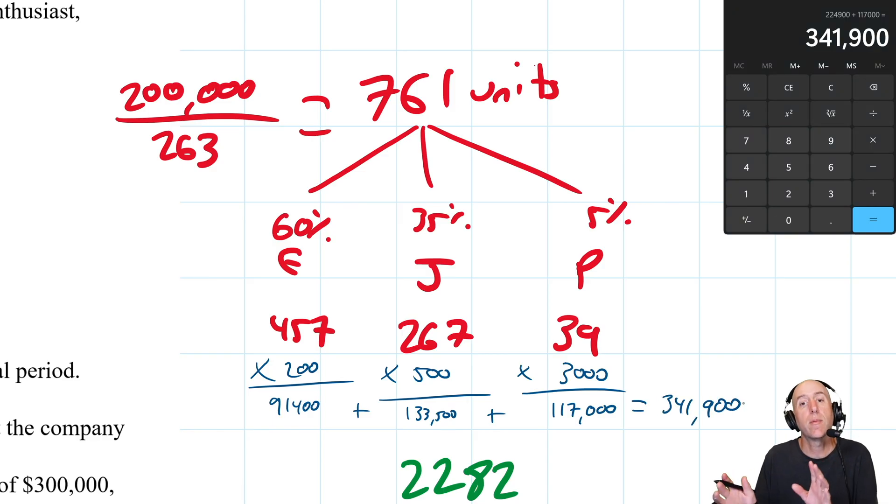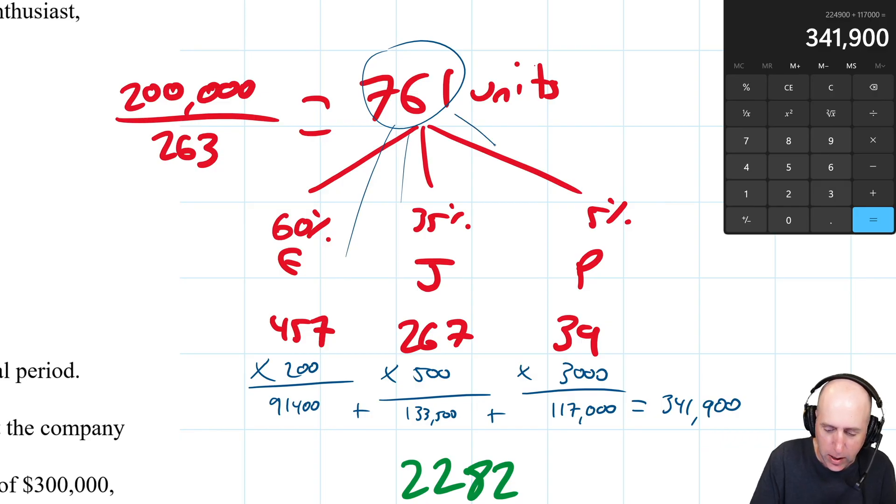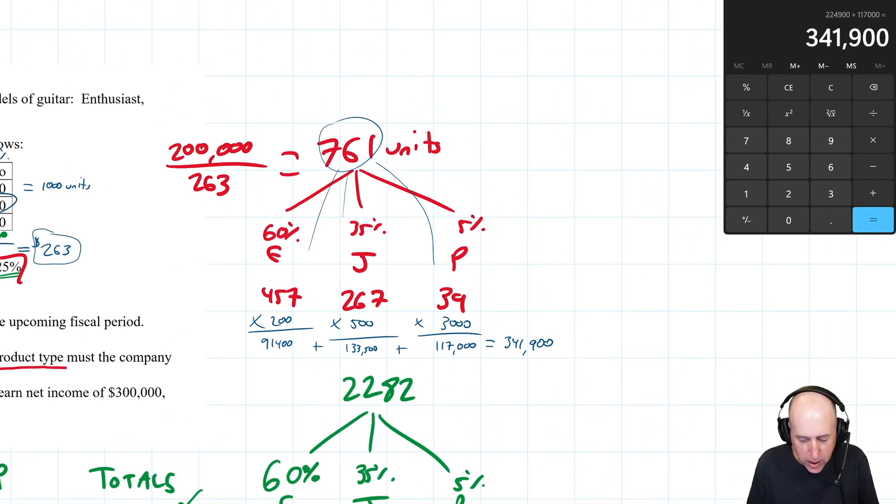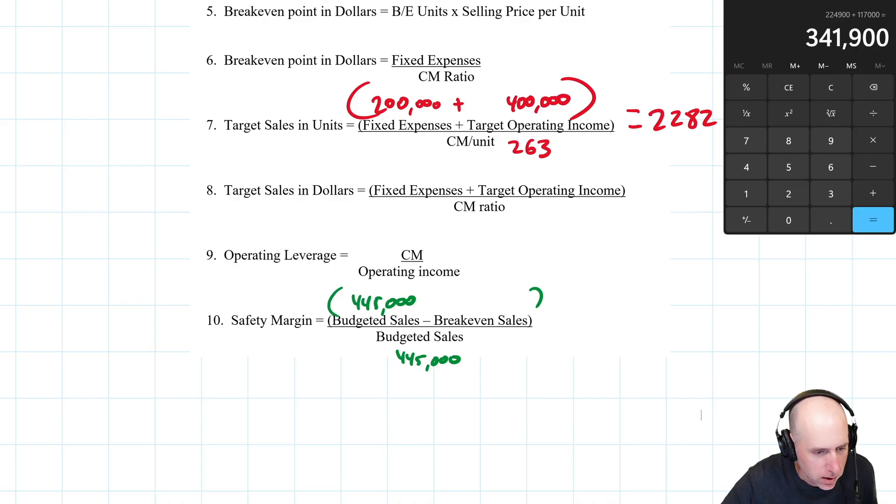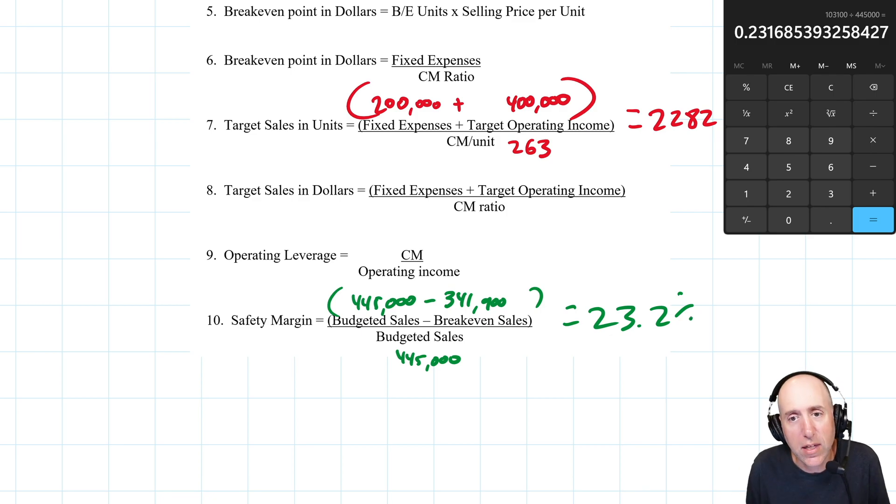My total sales here in dollars: 91,400 plus 133,500 plus 117,000 is 341,900. Now it is possible to do this with CM ratios - you'll get slightly different numbers because I'm rounding up twice. 341,900 is my break-even sales in dollars. Now let's math it out: 445,000 minus 341,900 divided by 445,000 equals 23.2%. What does that tell me? My sales can be 23.2% worse than I expected and I'm still gonna break even.